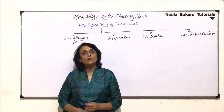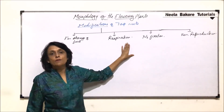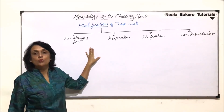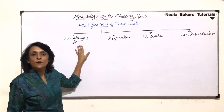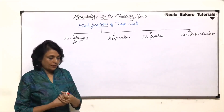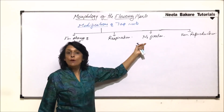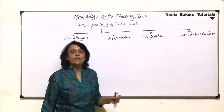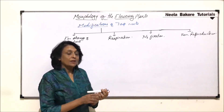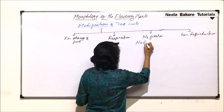In this part we'll continue with our classification of root modifications. We have already seen how roots are modified for performing the function of storage of food and respiration. Now let us talk about the next modification where roots are modified for nitrogen fixation. These roots are known as nodulated roots.